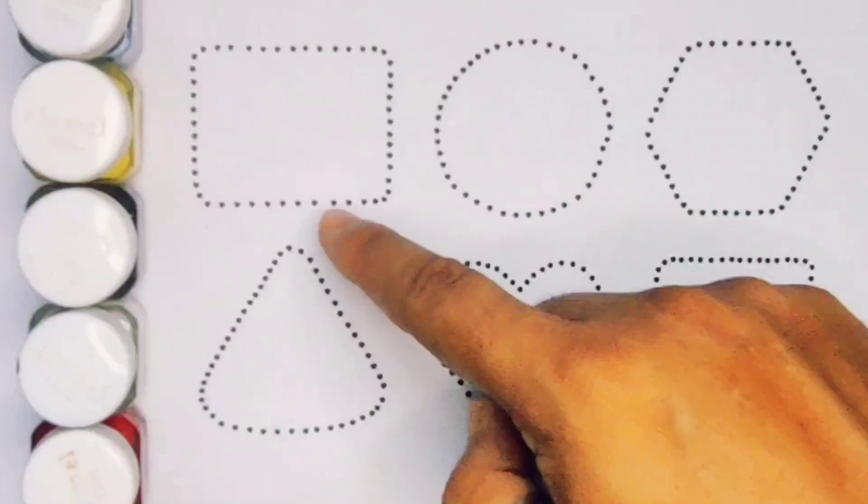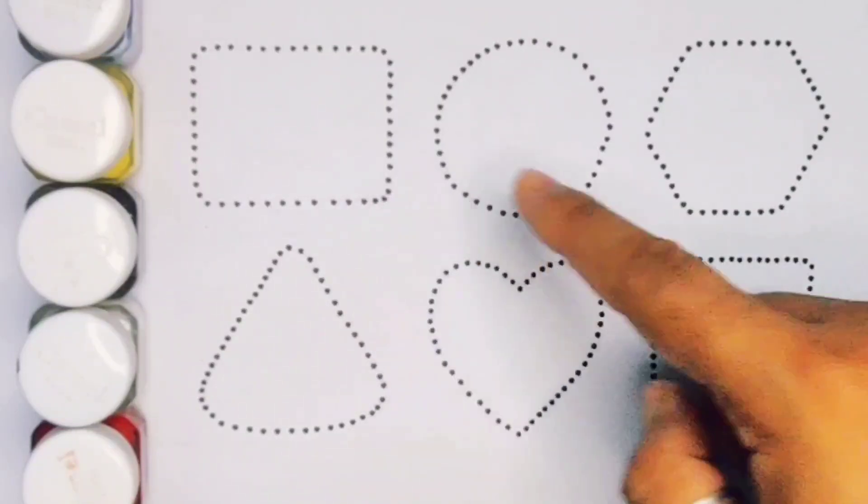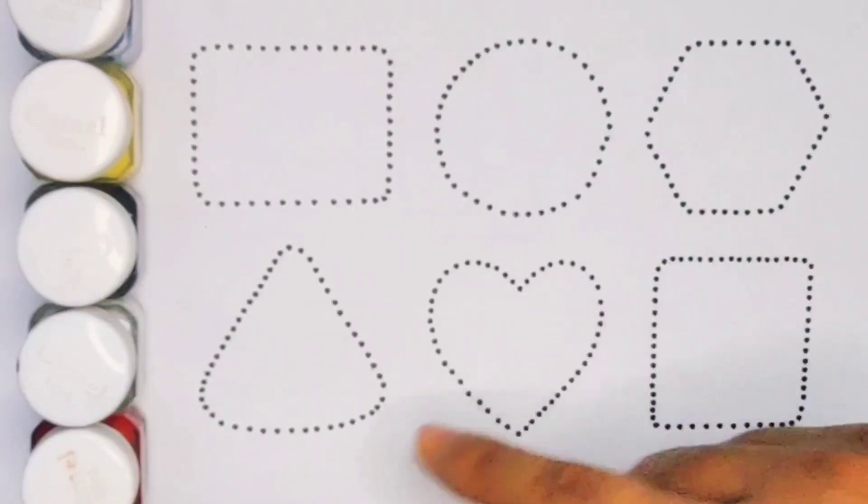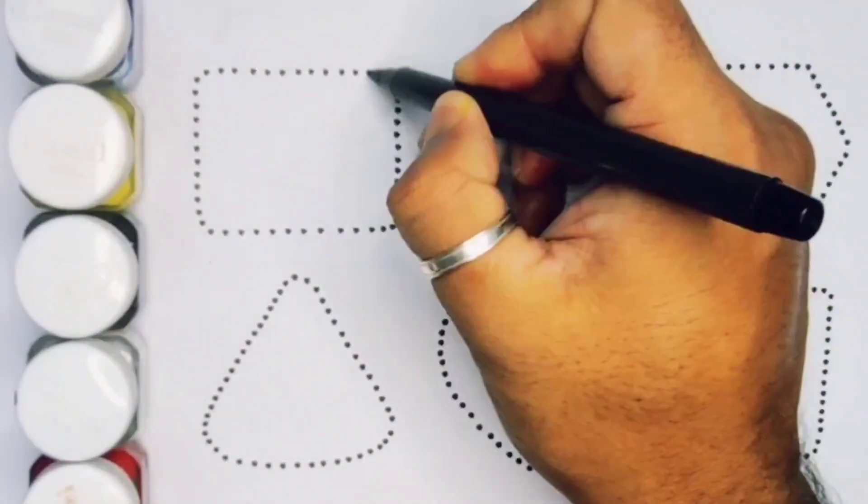Now let's learn the 2D shapes: rectangle, circle, hexagon, triangle, heart, and square. First we're going to draw the shapes.